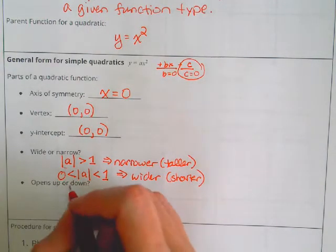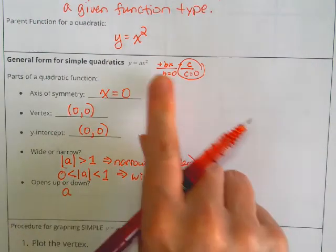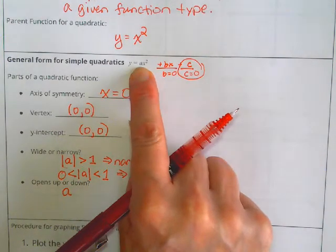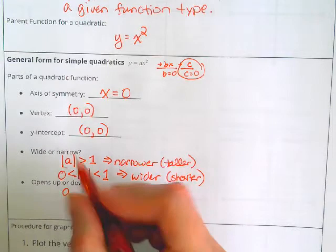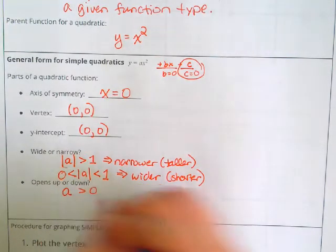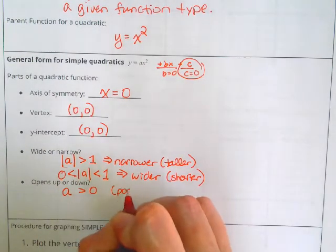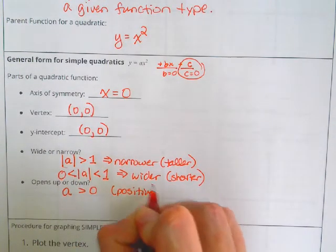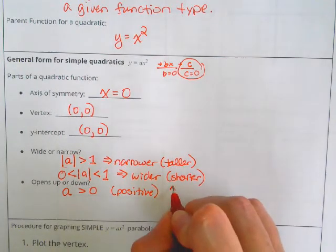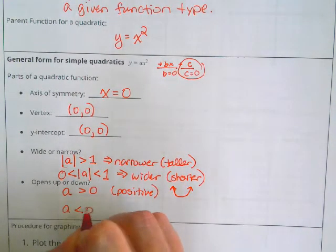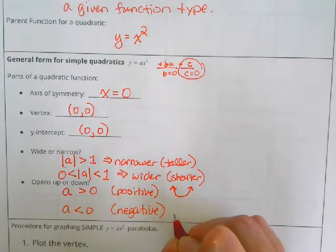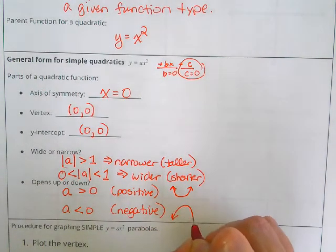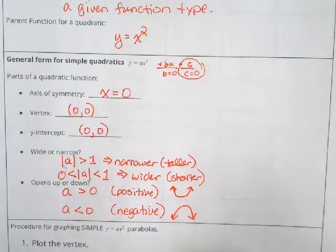And next, how do we determine whether it opens up or down? If that value that's in front of the x squared term, if the coefficient on the x squared term or the leading coefficient is positive or greater than zero, we know that it opens up. If a is less than zero, in other words, if it's negative, we know that it opens down.